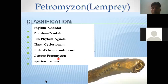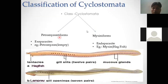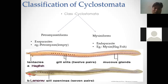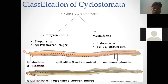In the classification, the class Cyclostomata is divided into two orders: Petromyzontiformes and Myxiniformes. Petromyzontiformes includes Petromyzon, which is the lamprey — it is an ectoparasite. It attaches to large fish from outside and gains nutrients from them. Myxiniformes includes myxin, which is an endoparasite — it enters the body of the host.